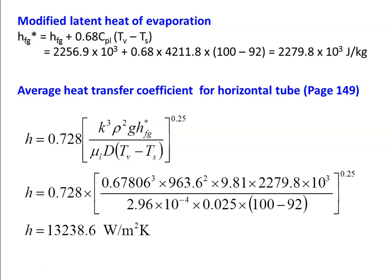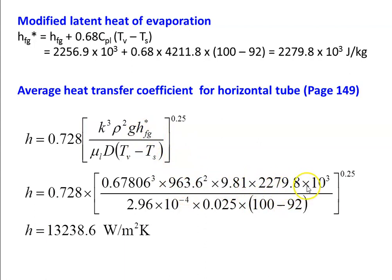For a horizontal tube, the correlation is H = 0.728 × [K³ × ρ² × g × HFG*] / [μ × D × (Tv − Ts)]^0.25. Note the two differences from the vertical plate correlation: the constant is 0.728 instead of 0.943, and the denominator uses diameter D instead of length L. Substituting K = 0.67806, ρ = 963.6, g = 9.81, HFG* = 2279.8 × 10³, μ = 2.96 × 10⁻⁴, D = 0.025, and ΔT = 100 − 92 = 8°C, H = 13238.6 W/m²·K.